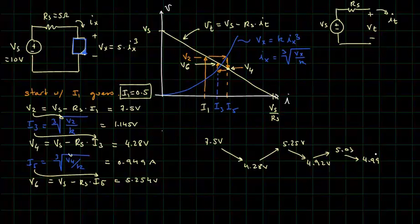If you keep going, eventually it will get to 5.00 volts. So that is the iterative method.